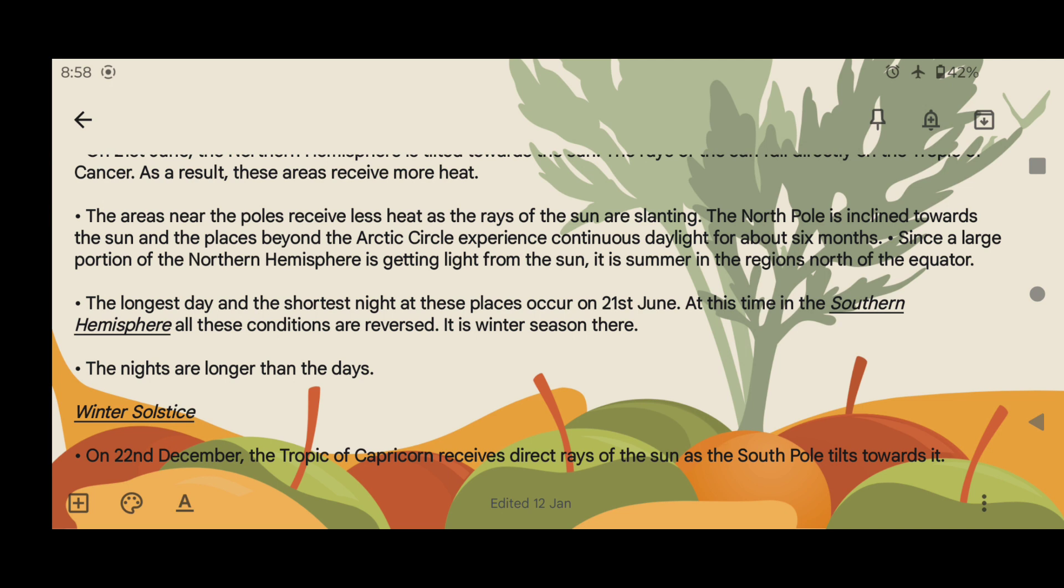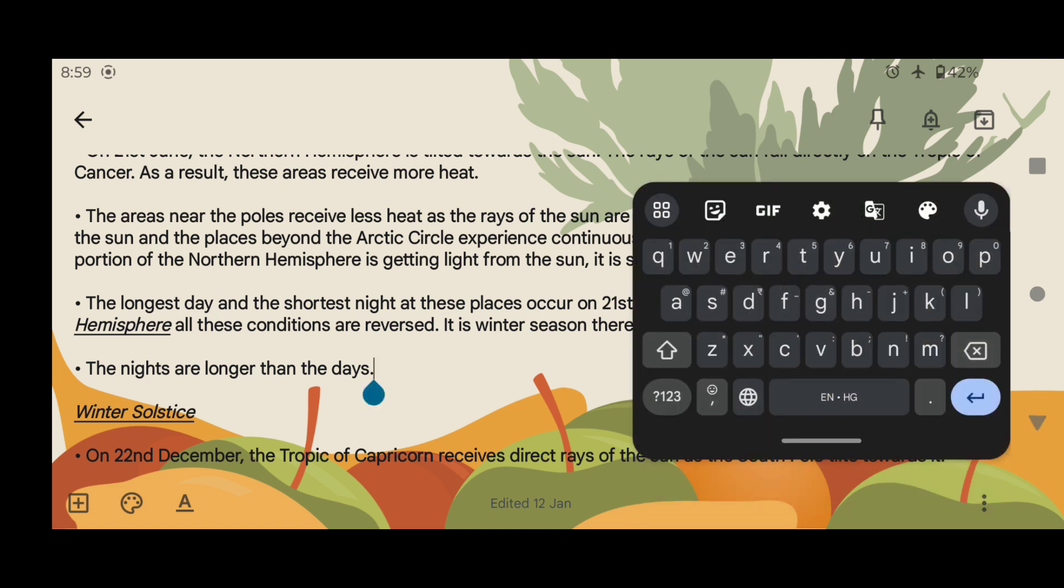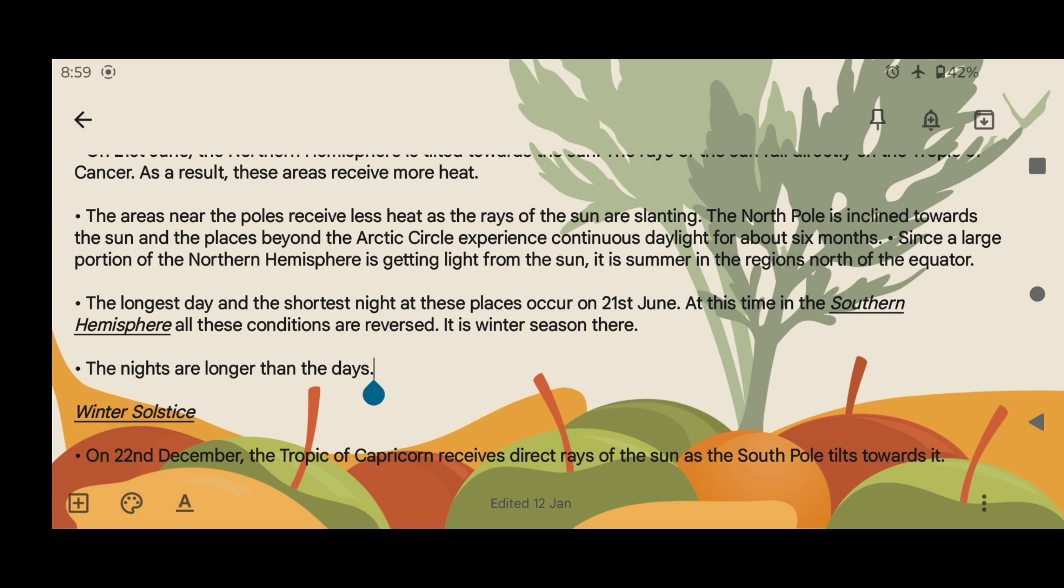Since a large portion of the northern hemisphere is getting light from the sun, it is summer in the regions north of the equator. The longest day and the shortest night at these places occur on 21st June. At this time in the southern hemisphere, all these conditions are reversed. It is winter season there. The nights are longer than the days.